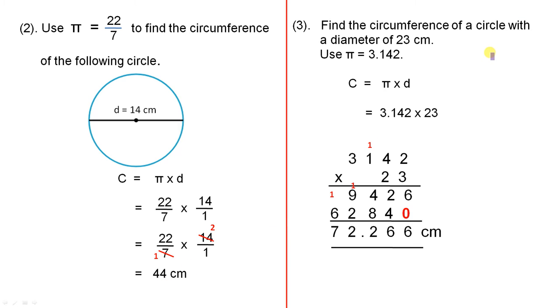Find the circumference of a circle with a diameter of 23 centimetres. We can use pi equals 3.142. We can use the formula C equals pi times d, which is 3.142 times 23. As we saw in previous lessons, when you're doing multiplication with decimals, don't worry about the decimal when you're doing the multiplication. Just put down all the digits, do your long multiplication, which is what we've done here, and I've included all the trading.